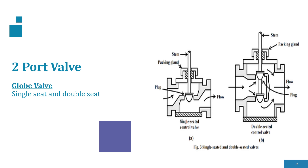A double-seated valve is a top and bottom guided valve; these valves have two plugs and two seats. In this type of valve, the line pressure acts upward on one plug and downward on the other, and because of this the force is balanced. These valves are used for high-pressure applications.